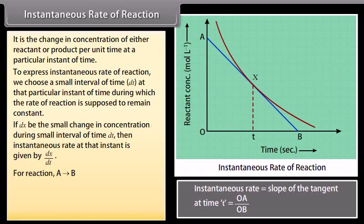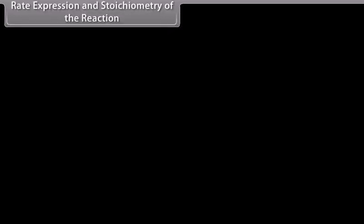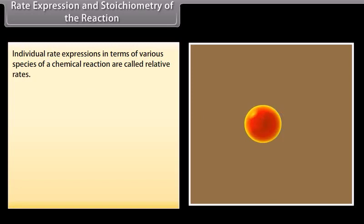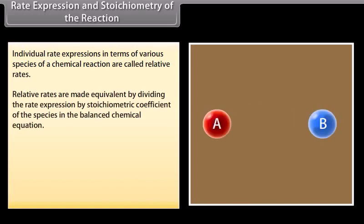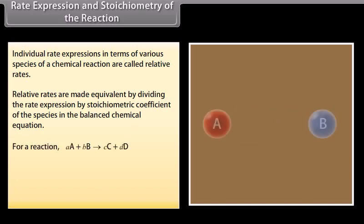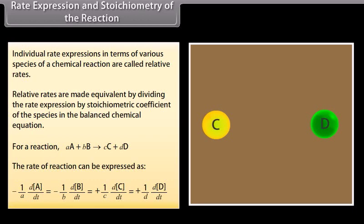For a reaction in which A tends to B, instantaneous rate is equal to dB/dt. Rate expression and stoichiometry of the reaction: individual rate expressions in terms of various species of a chemical reaction are called relative rates. Relative rates are made equivalent by dividing the rate expression by the stoichiometric coefficient of the species in the balanced chemical equation. For a reaction aA + bB → cC + dD, the rate of a reaction can be expressed accordingly.